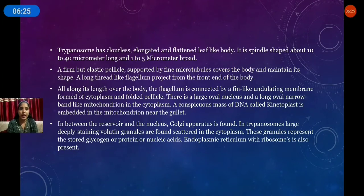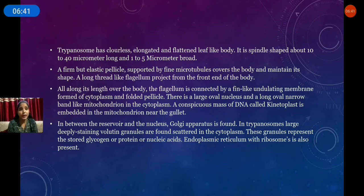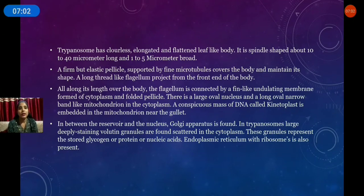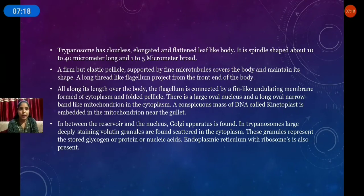A conspicuous mass of DNA called the kinetoplast is embedded in the mitochondria near the gullet. The kinetoplast is located between the reservoir and the nucleus. Golgi apparatus is found in trypanosoma. Large deeply staining volutin granules scattered in the cytoplasm represent stored glycogen, nucleic acid, and protein. Endoplasmic reticulum with ribosomes is also present.